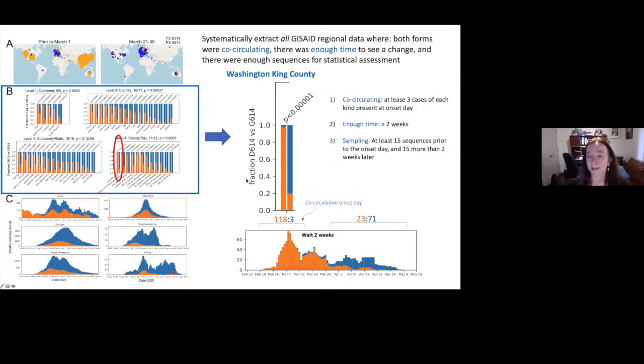So how do you read this thing? What we do is, you can choose any level you want, continent, country, sub-country or state, counties and cities, and all that information is in GISAID. We find the first place where both are co-circulating, that first time point, and then we look at the relative frequency sampled prior to that time point, we wait two weeks because you have to have some transition time, and then we just look at the relative frequencies after two weeks. If this is significantly different by a Fisher's test, then we pull it out and we consider it interesting.